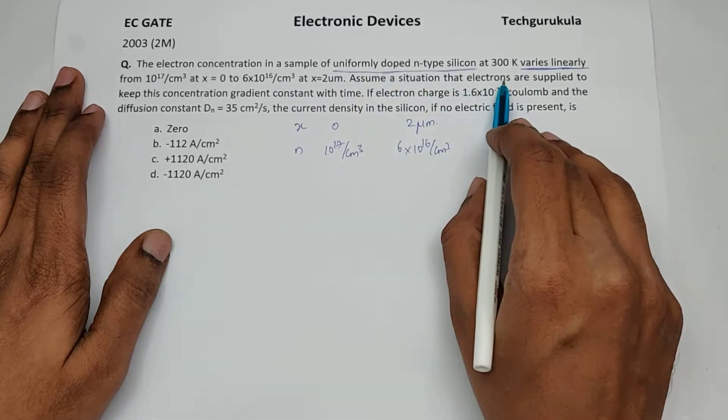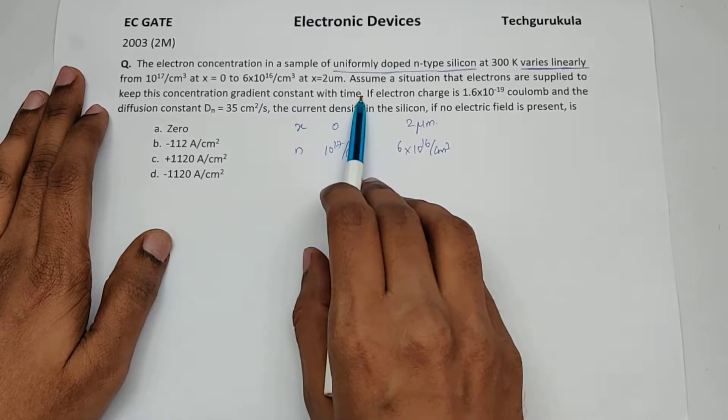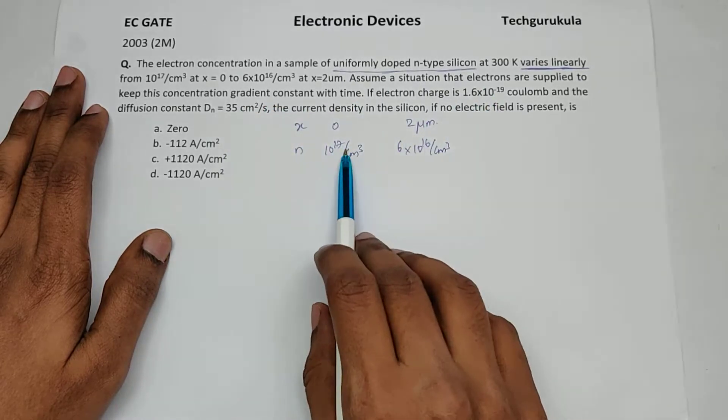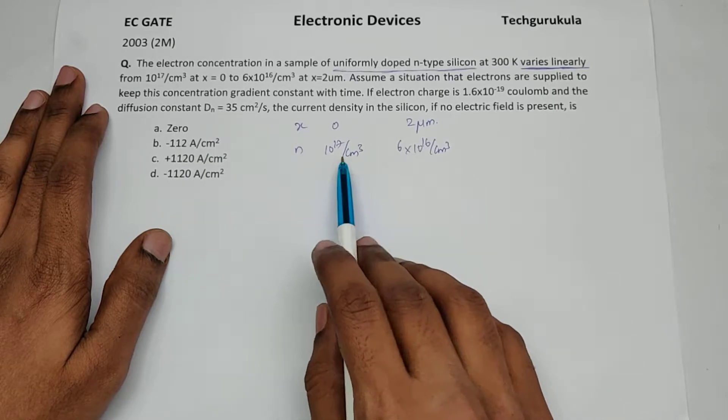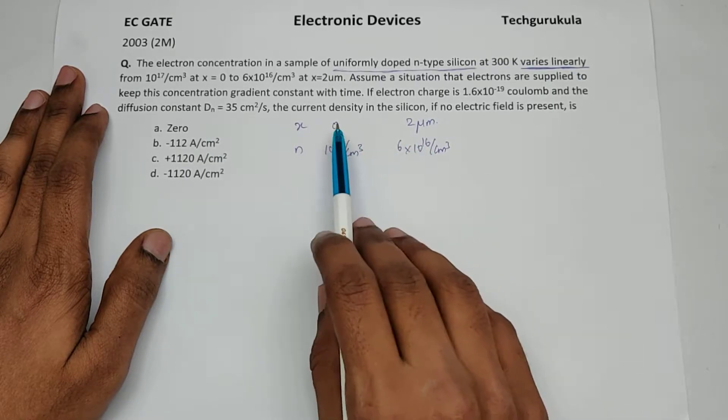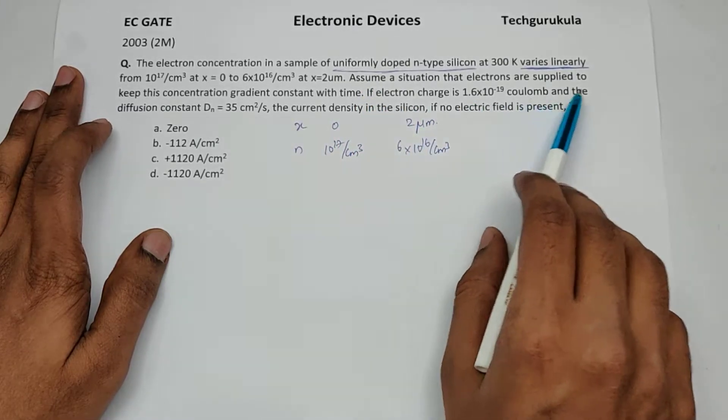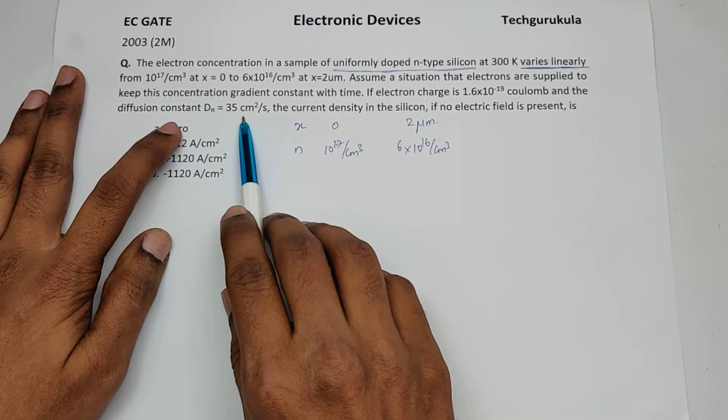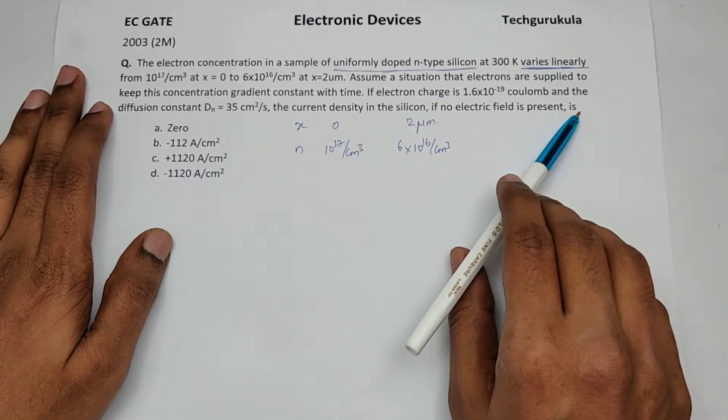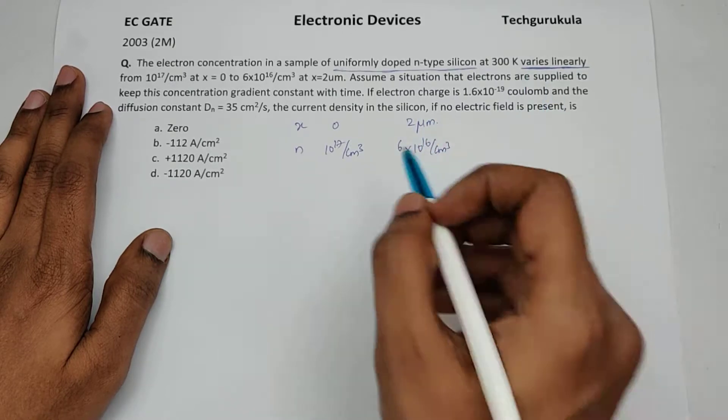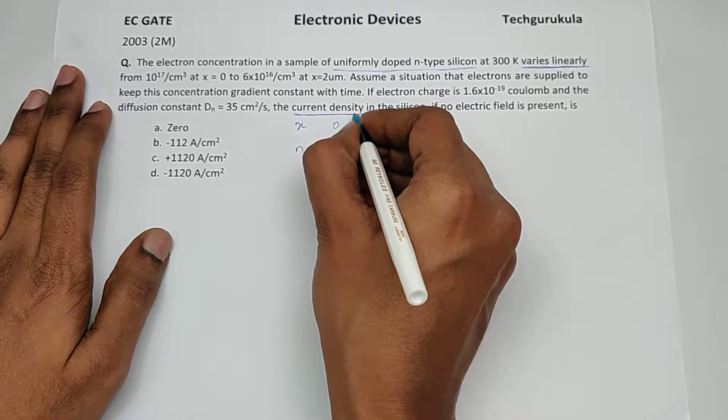Assume a situation that electrons are supplied to keep this concentration gradient constant with time. In steady state, the carrier concentration is going to be the same, linearly varying from 10^17 to 6 times 10^16 from 0 to 2 micrometers. If the electron charge is given and the diffusion constant is given, find the current density in the silicon if no electric field is present. When there is no electric field, the current density will be nothing but the diffusion current density.